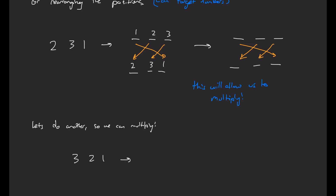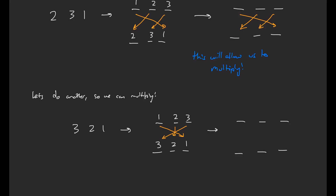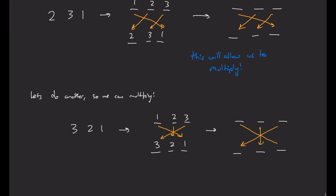Let's look at (3, 2, 1). This time, (3, 2, 1) basically just swaps the positions of 1 and 3. We can get rid of the numbers and we have this arrow diagram.